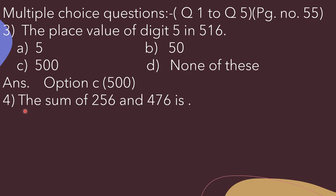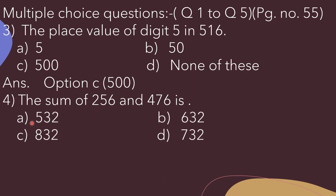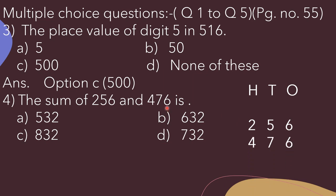Question number 4: The sum of 256 and 476. Sum means total. We have to add both numbers and find the answer. Options are: A) 532, B) 632, C) 832, D) 732. We will write the numbers in columns — ones, tens, and hundreds — then write 256 and below it 476.